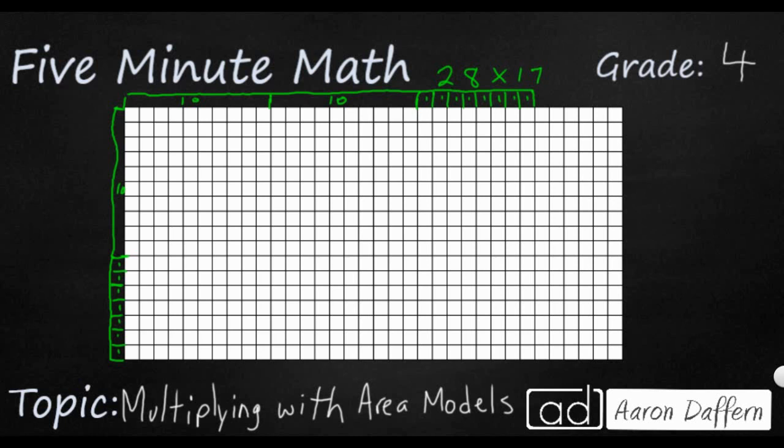Now, how we use area models is we break each model here into four parts. The first is going to be the tens times the tens. And then you're going to be the 10 by the ones of the other number. And then finally you're going to multiply the ones by the ones. So you see I've got four big sections here.